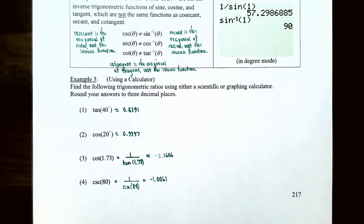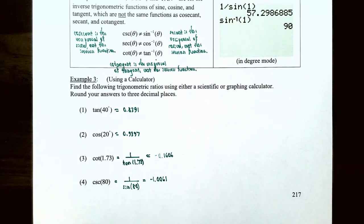In this video we covered how to use right triangles to evaluate trigonometric functions, how to find function values for 0°, 30°, 45°, 60°, and 90°, and their radian equivalents 0, π/6, π/4, π/3, and π/2. We also used co-functions of complementary angles and the definitions of trigonometric functions of any angle. If you have any questions about these examples or the homework, please let me know, and I'll see you in the next video on applications of trigonometry of right triangles.